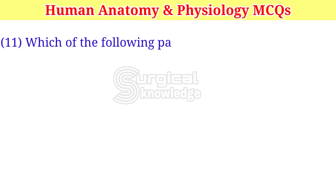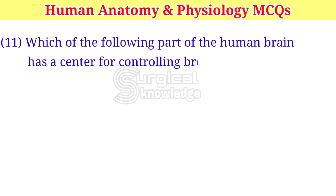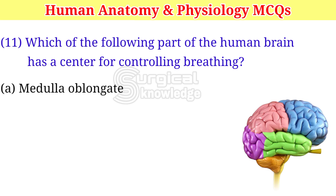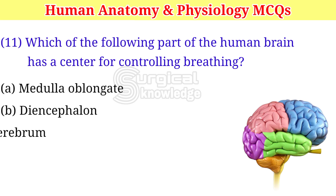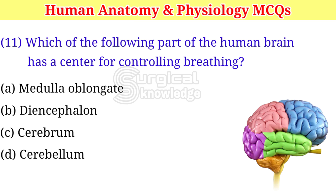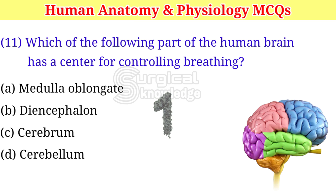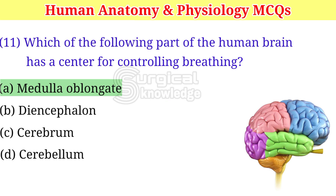Which of the following part of the human brain has a center for controlling breathing? A. Medulla oblongata. B. Diencephalon. C. Cerebrum. D. Cerebellum. Right answer is medulla oblongata.